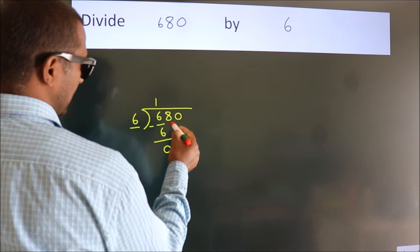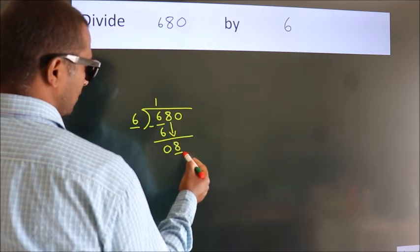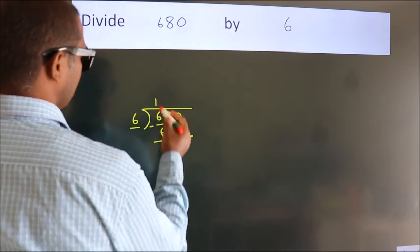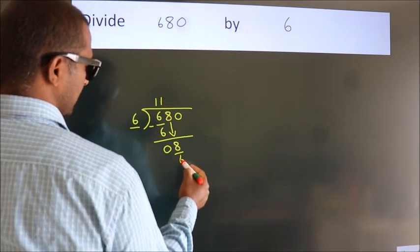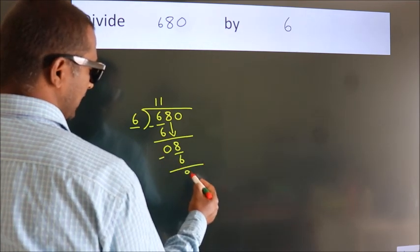After this, bring down the beside number. So, 8 down. A number close to 8 in 6 table is 6 once, 6. Now, we subtract. We get 2.